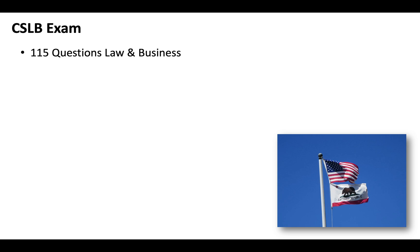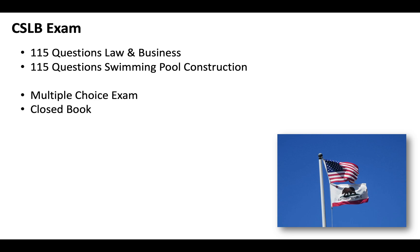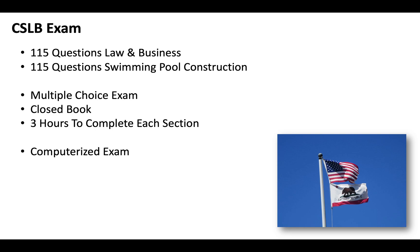So essentially, you'll have to pass two tests — 115 questions of law and business and 115 questions covering swimming pool construction. It's going to be multiple choice, closed book, and you'll get three hours to complete each section. It's a computerized exam that you'll take at a CSLB testing facility. Keep in mind, if you're applying from out of state, you will have to come to California to take the exam.